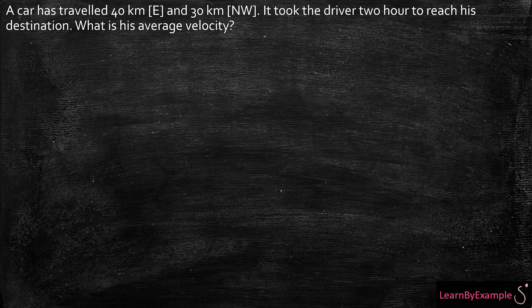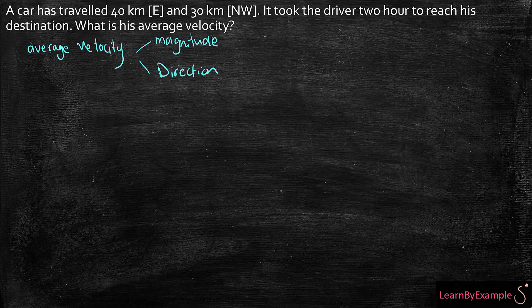Now let's understand how to calculate the average velocity. Remember that average velocity has both magnitude and direction, so when I write my answer I will need to include both. Let's draw a picture of this question. A car has traveled 40 kilometers east — so I'm going to draw a vector. This is east, this is north, this is west, and this is south.